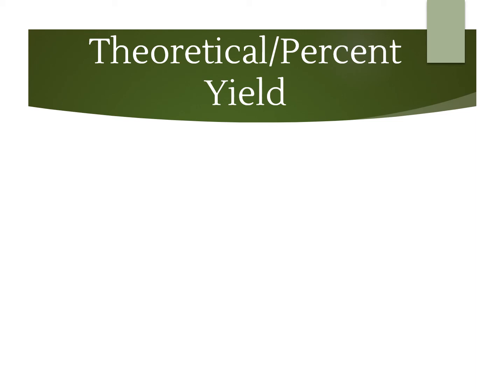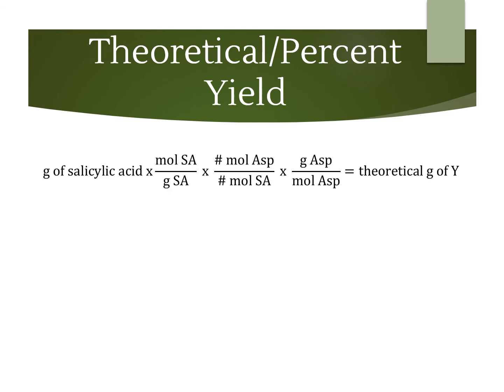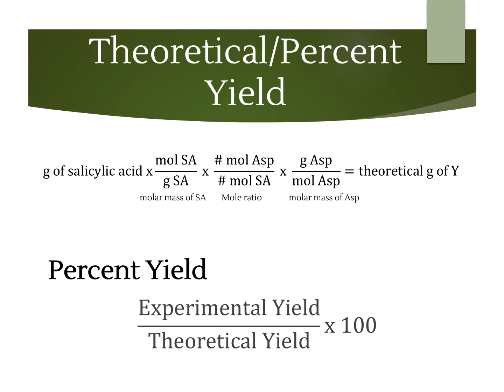For the calculations, you're going to be calculating the theoretical yield and percent yield. Start with your grams of salicylic acid and use the molar mass and the molar ratio to find the theoretical grams of aspirin — that's y in this equation. Then use the percent yield formula to see how much you produced out of how much you were supposed to. For the experimental yield, use the mass of the pure recrystallized aspirin, and the theoretical yield is what you calculated above.